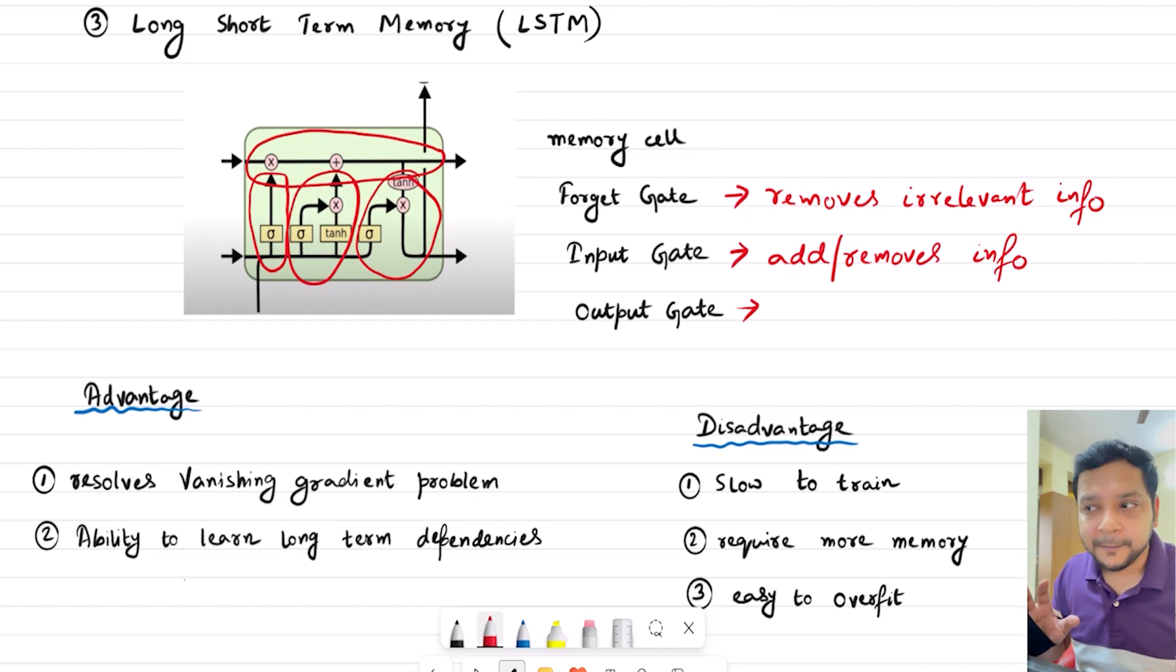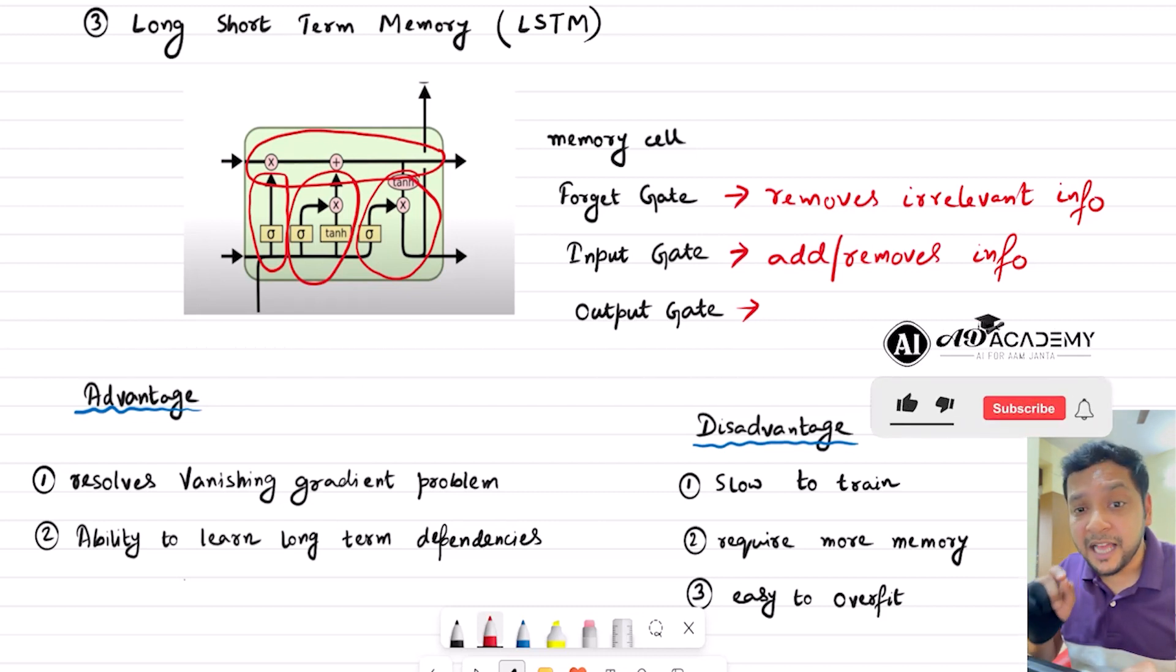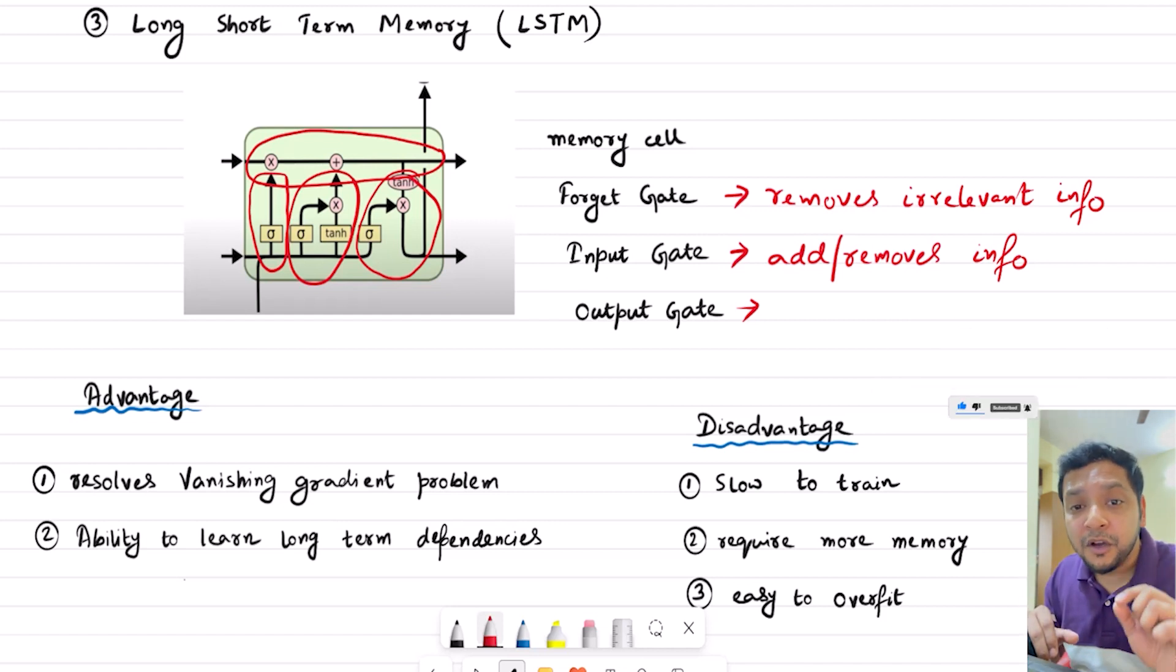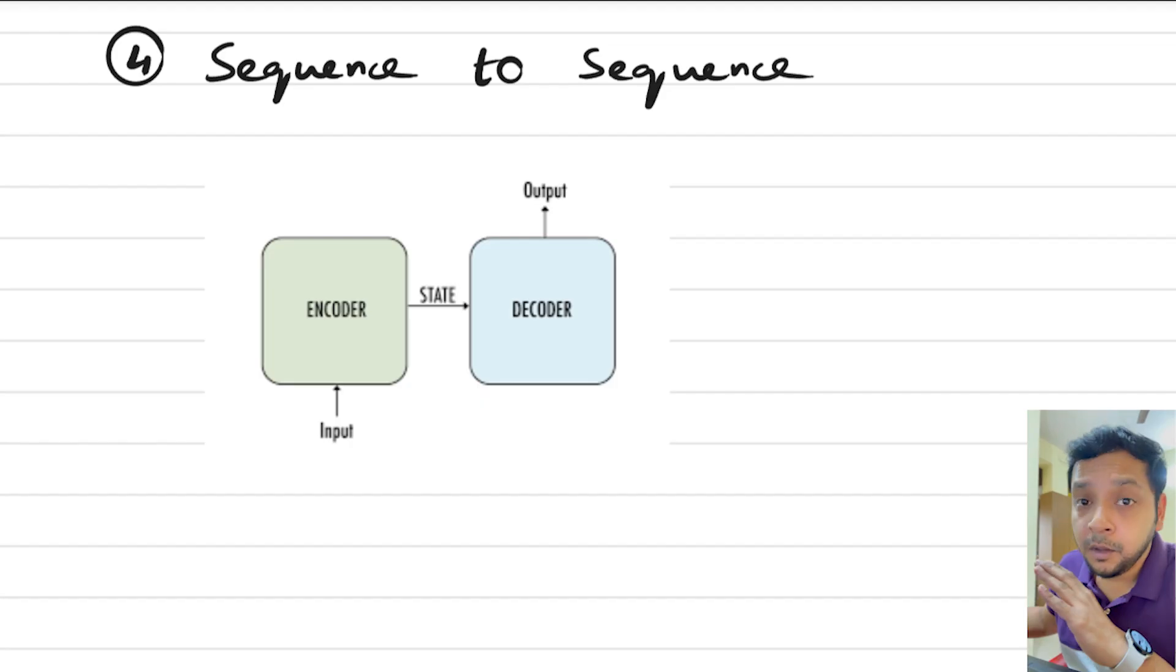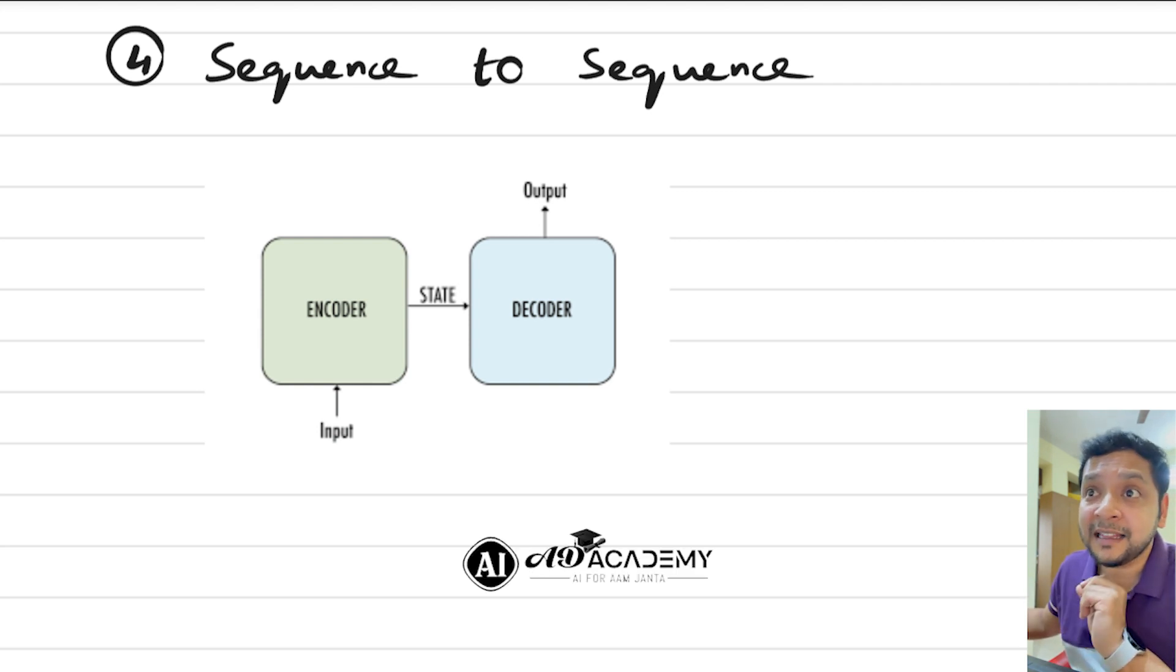But there are lots of disadvantages also. In RNN I've already mentioned that if the architecture is large, then it's very slow to train and also very slow to perform because inputs are given in sequences. LSTM is also very slow to train and it requires more memory, and LSTM is very easy to overfit.